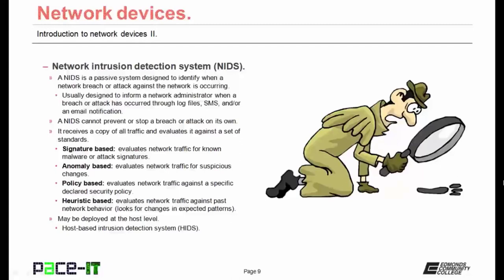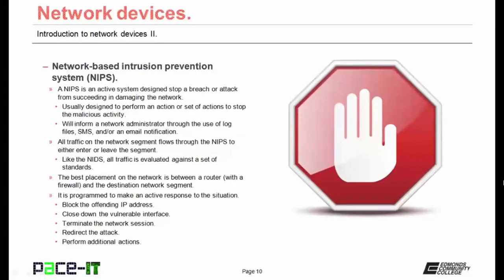The intrusion detection system may also be deployed at the host level. When placed on a host, instead of being called a NIDS it's called a HIDS. Then there's the Network Based Intrusion Prevention System, or NIPS. A NIPS is an active system designed to stop a breach or an attack from succeeding in damaging the network. They're usually designed to perform an action or set of actions to stop the malicious activity.